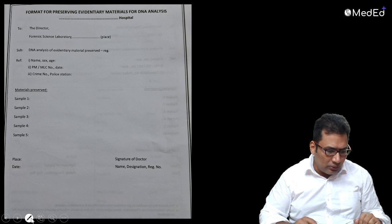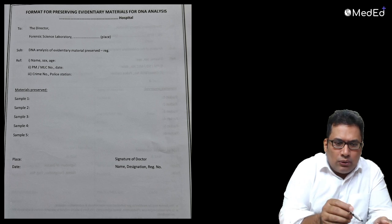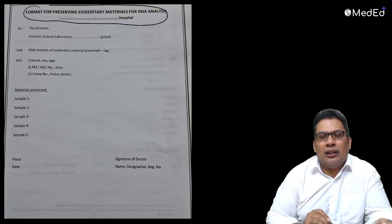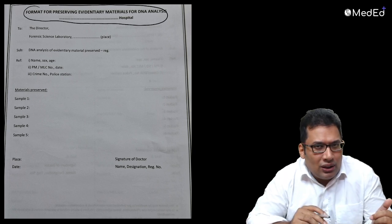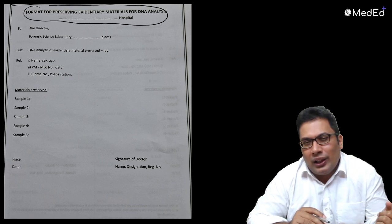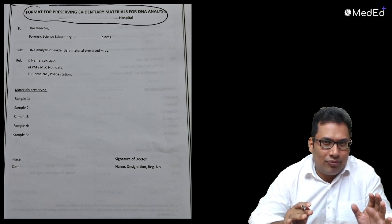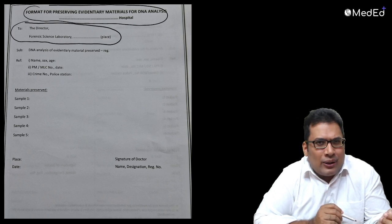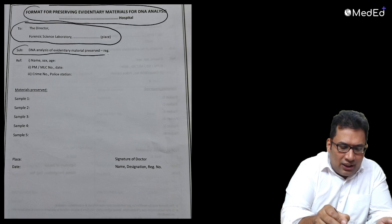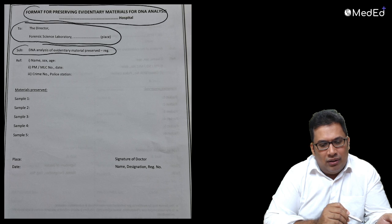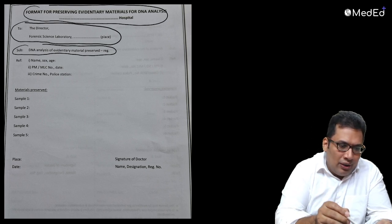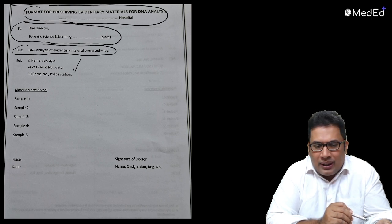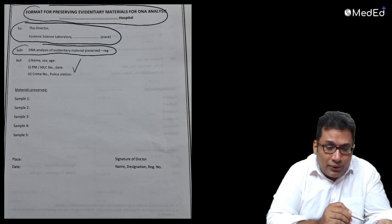Let's see the standard pro forma. The name of the hospital - you can write Subbaiah Institute of Medical Sciences and Research Centre, Shimoga, or LNGP Hospital, New Delhi. To: Director FSL, Forensic Science Laboratory, Hyderabad and New Delhi. Subject: DNA analysis of evidentiary materials preserved. Then the details of the case: name, age and sex; postmortem number; MLC number and the date of the postmortem examination; crime number, CR number, and police station.